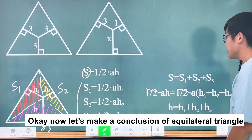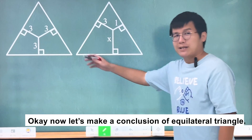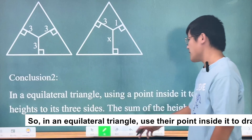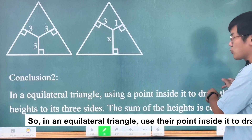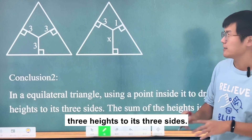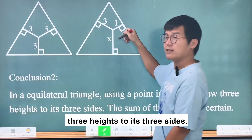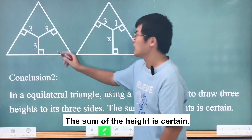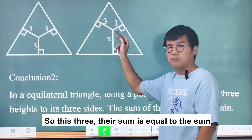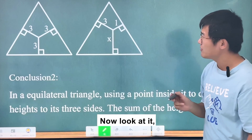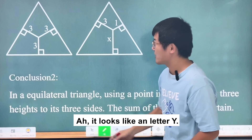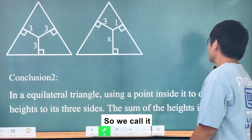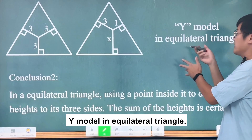Let's make a conclusion. In an equilateral triangle, using a point inside it to draw three perpendicular heights to its three sides — the sum of those three heights is constant. This shape looks like the letter Y, so we call it the Y model in an equilateral triangle.